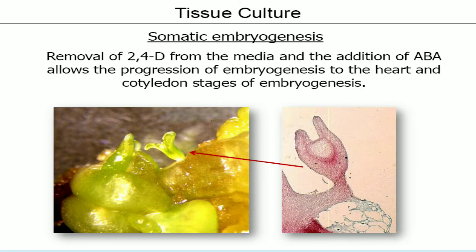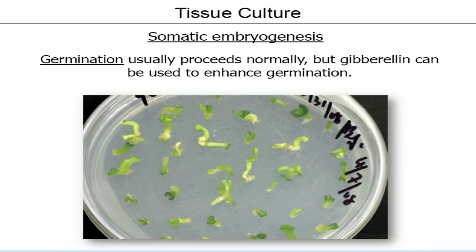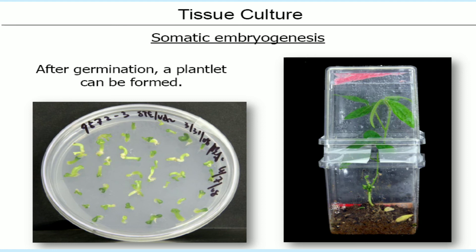In the third stage (cotyledon stage), removal of 2,4-D from the media and addition of ABA allows propagation of embryogenesis to the heart and cotyledon stage. The fourth stage (conversion) prepares the embryo for germination and can be aided by desiccation using KCl. In germination, the process usually proceeds normally, but gibberellin can be used to enhance germination rate. After germination, plantlets are formed.